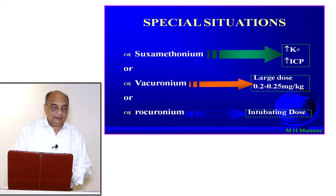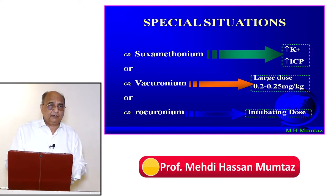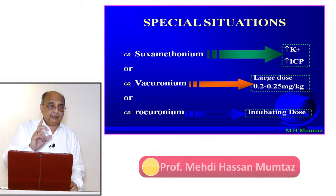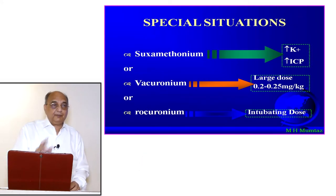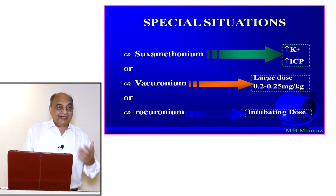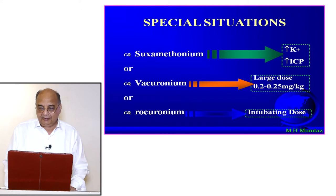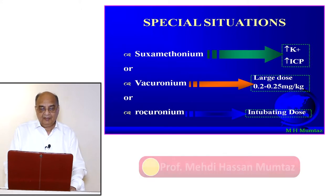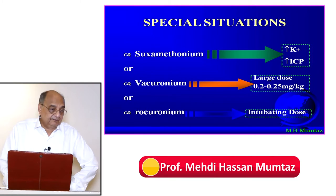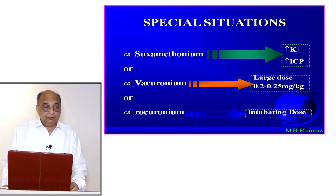Special situation: when using suxamethonium, always remember it will increase potassium levels and also increase intracranial pressure due to fasciculations. The mechanism should be understood. An alternative is rocuronium at 0.2 to 0.25 mg/kg body weight as a large dose, or using the intubating dose of rocuronium.